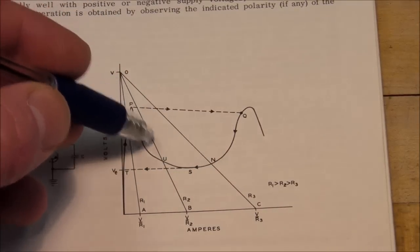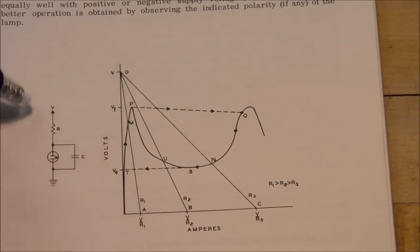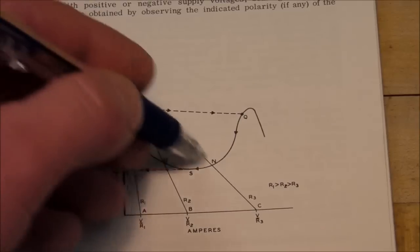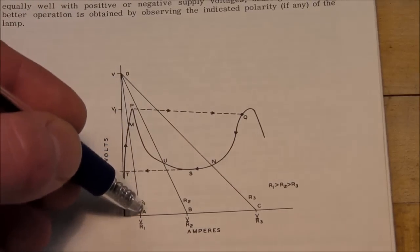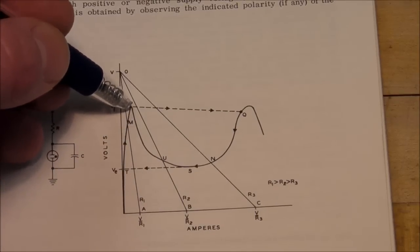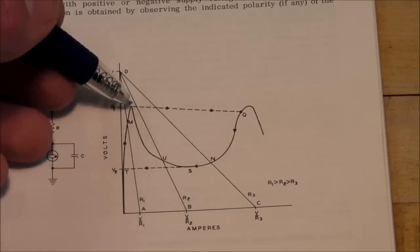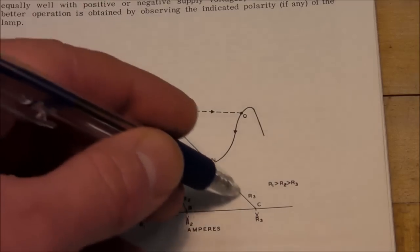But basically for the oscillator circuit you also have to consider the load line of the resistor. Here's three different load lines. If your load line looks like this, if your resistance is too high, then it's not going to turn on at all. It will never actually flash, it will never actually have the glow plasma inside.